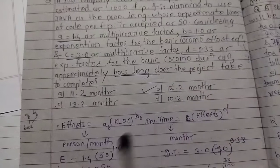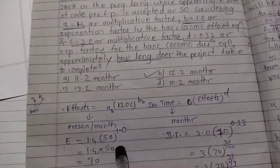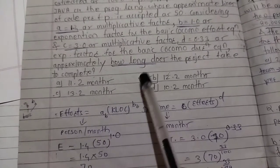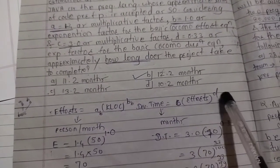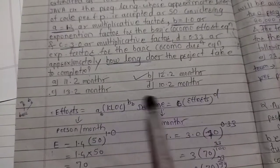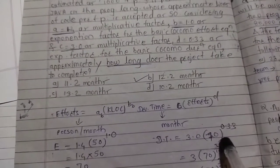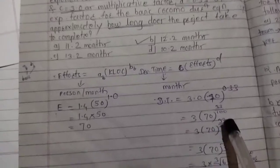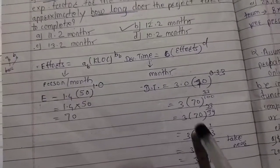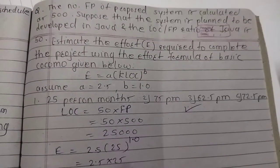E = A × (KLOC)^B, where A = 1.4 and B = 1.0 and KLOC = 50, so E = 70 persons per month. From this effort value of 70, we calculate development time: Development Time = C × (Effort)^D. Here C = 3.0 and D = 0.33, and effort = 70. Calculating this gives development time ≈ 12.2 months. This is the development time for the project.